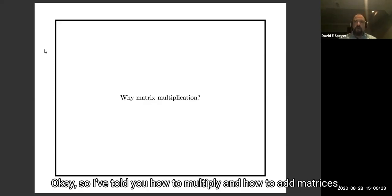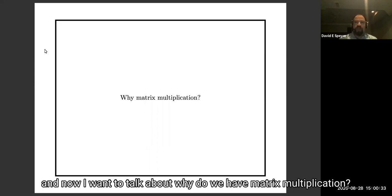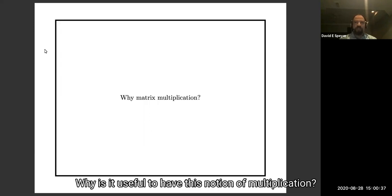Okay, so I've told you how to multiply and how to add matrices. I've told you what the properties of matrix multiplication and addition are. And now I want to talk about why do we have matrix multiplication? Why is it useful to have this notion of multiplication?